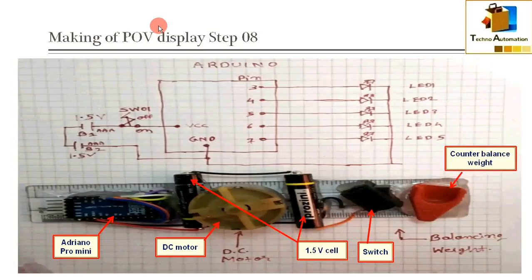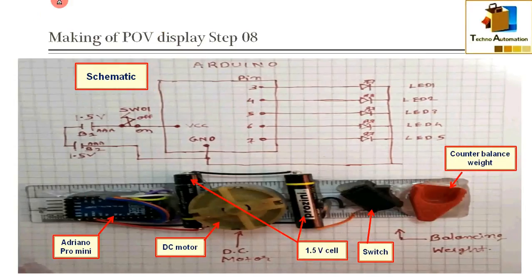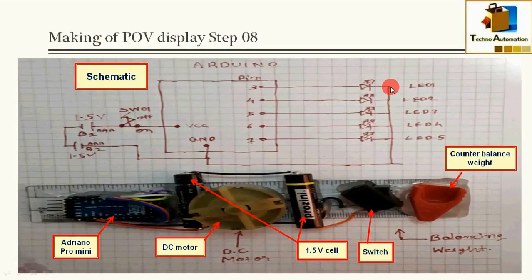Finally, I have made the wiring using this schematic diagram. As per the schematic, both cells are connected in series and the positive terminal of the cell is connected with the switch. Second terminal of the switch is connected to the VCC pin of the Arduino. The negative pin of the second cell is connected with the ground pin, and the ground pin is also connected with the LED ground pin.